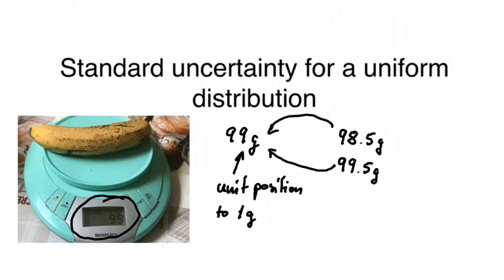And what we see here is that this difference between the lower and the upper value for the banana is what is called the resolution. This is the resolution and this difference is one gram. So the kitchen scales have a resolution of one gram and the true value for the banana could be anywhere between these 98.5 and 99.5 grams.